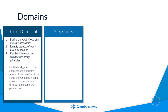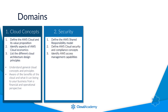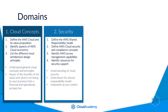Domain two: security. This domain looks at four components of cloud security — define the AWS shared responsibility model, define AWS cloud security and compliance concepts, identify AWS access management capabilities, and identify resources for security support. This security domain will test your understanding of cloud security, ensuring you understand the boundaries of where specific responsibilities lay between you and AWS. It will also assess your knowledge of access control to your AWS resources and how you can maintain compliance within your environment and how to request additional support if required.